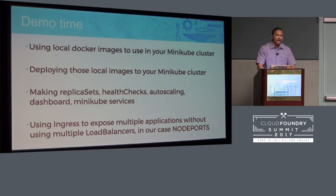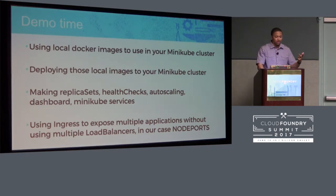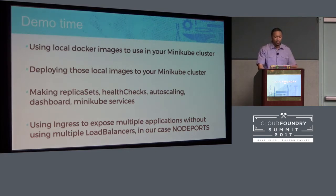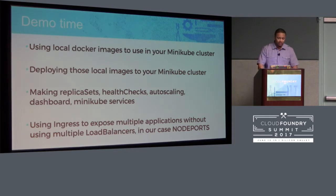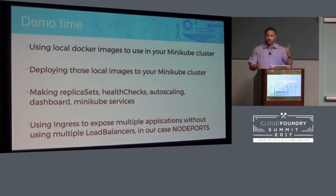I'm going to show you my Docker images on the Minikube virtual machine, deploy them to the cluster, make replica sets, show health checks, auto scaling, the dashboard, Minikube services, and how to use ingress to expose multiple applications with one load balancer. The problem before was having a bunch of microservices, each needing their own load balancer, which drives up your cloud bill. With an ingress controller, you can put everything behind one load balancer and use different endpoints for each service.